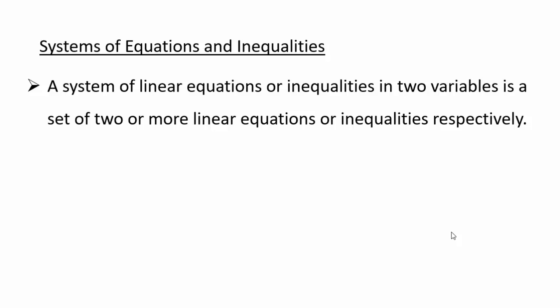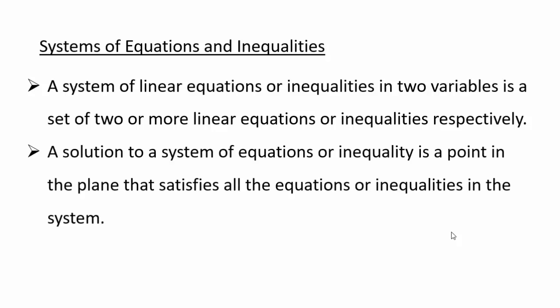A system of linear equations or inequalities in two variables is a set of two or more linear equations or inequalities. A solution to this system means points in the plane that satisfy all the equations and inequalities in that system — similar to how solutions to a single linear equation are all points belonging to that line, but now they must satisfy every equation in the system.